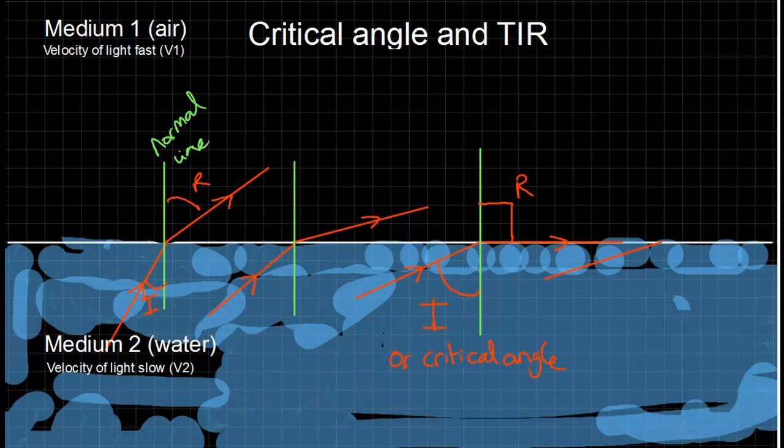If you increase the angle any more than this, you get what's called total internal reflection. So all the light that hits the boundary gets reflected back, and it follows the law of reflection like you would expect, where angle of incidence equals angle of reflection.